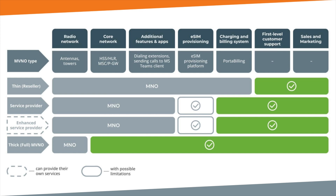The eSIM provisioning system connects to the mobile core for card activation. Usually, they have out-of-the-box connectors for HLR, such as Ericsson. However, building integrations with proprietary APIs for the sake of an MVNO with 50,000 subscribers is not going to be profitable for the mobile operator. So, Thick MVNOs are not limited by the service features the mobile operator provides.